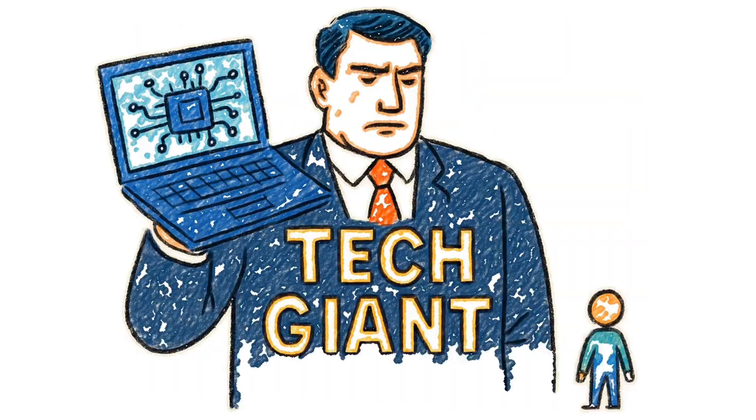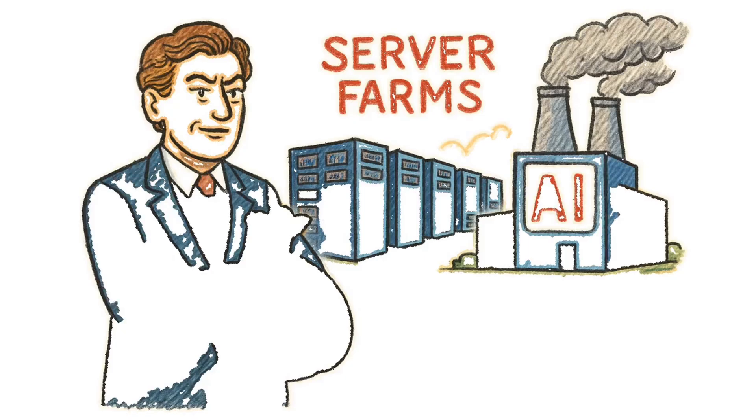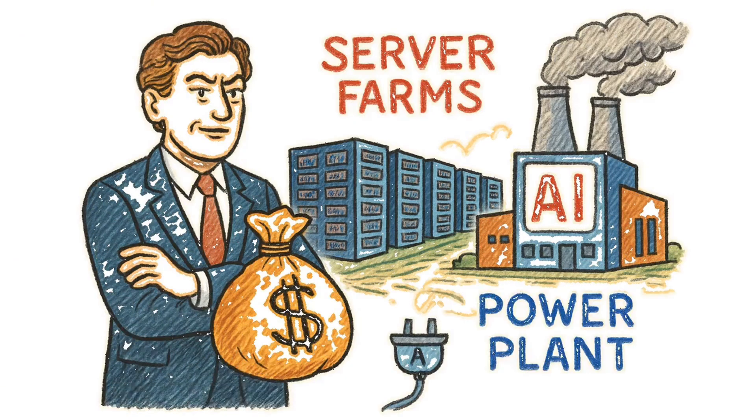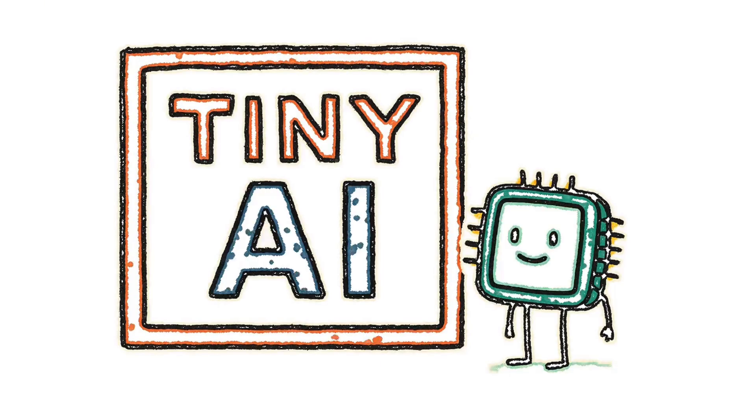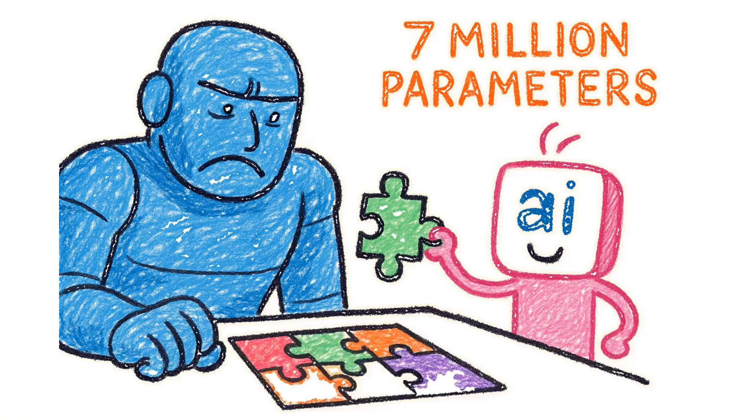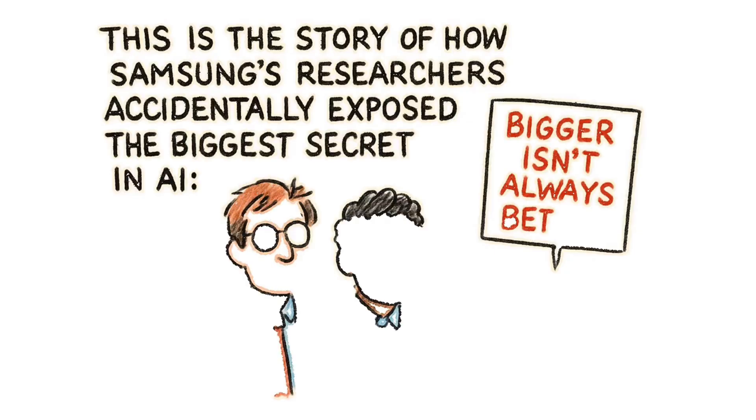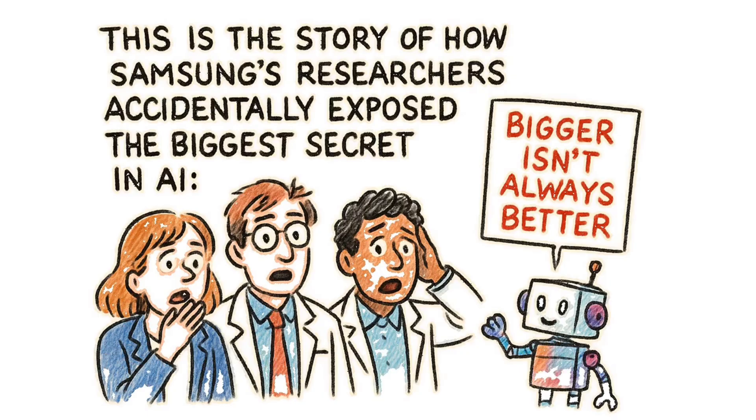Picture this. You're a tech giant. You've got billions of dollars, server farms the size of small countries, and AI models so massive they need their own power plants. And then a tiny AI model shows up. Seven million parameters. And it absolutely destroys you at solving puzzles. This is the story of how Samsung's researchers accidentally exposed the biggest secret in AI. Bigger isn't always better.